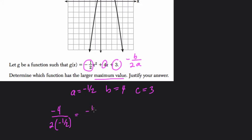And that equals what? Negative 4 over 2 times negative one-half is negative 1. Negative 4 over negative 1 is just 4. So that's not our vertex, that's not our highest point. That's the x value of the vertex.